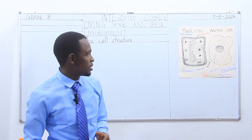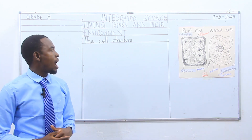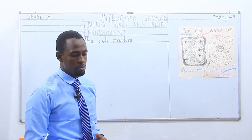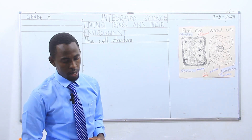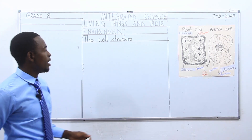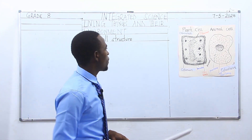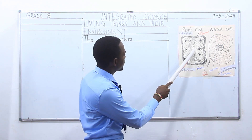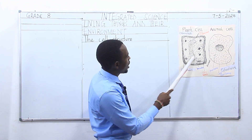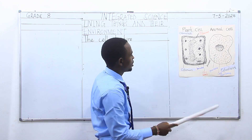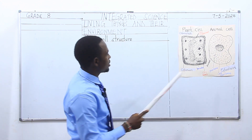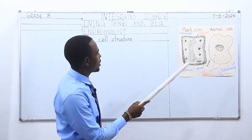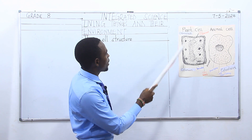Both plants and animals have cells, and we are going to identify and observe their parts. Here I have the structures of a plant cell and an animal cell. This is a plant cell, as you can see, and this is an animal cell. Both cells have similar parts.